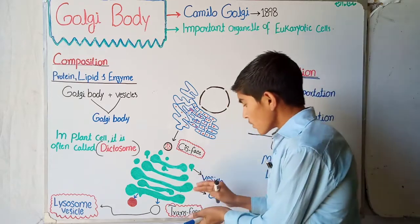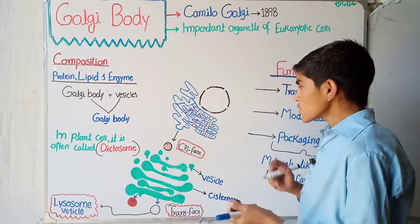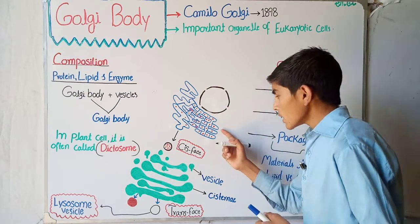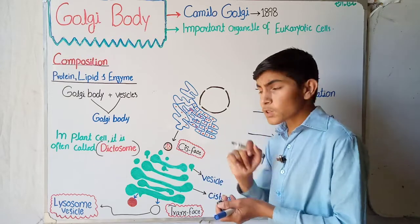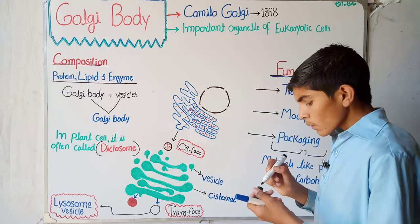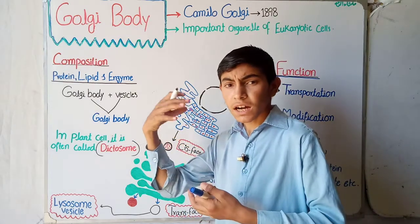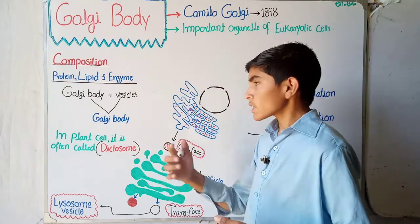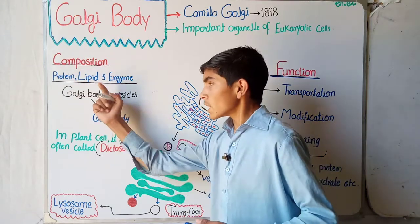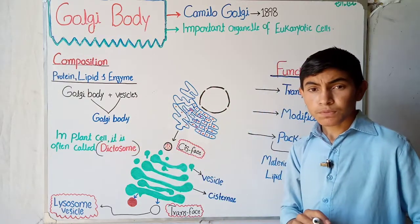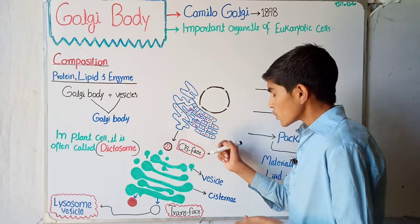The Golgi body is situated a little bit toward the membrane side. As shown, this is the nucleus, this is the endoplasmic reticulum, and these vesicles are called the Golgi body. Now the composition is the same as the other organelles of the cell, like the mitochondria and the endoplasmic reticulum — it is made of protein, lipid, and enzyme.